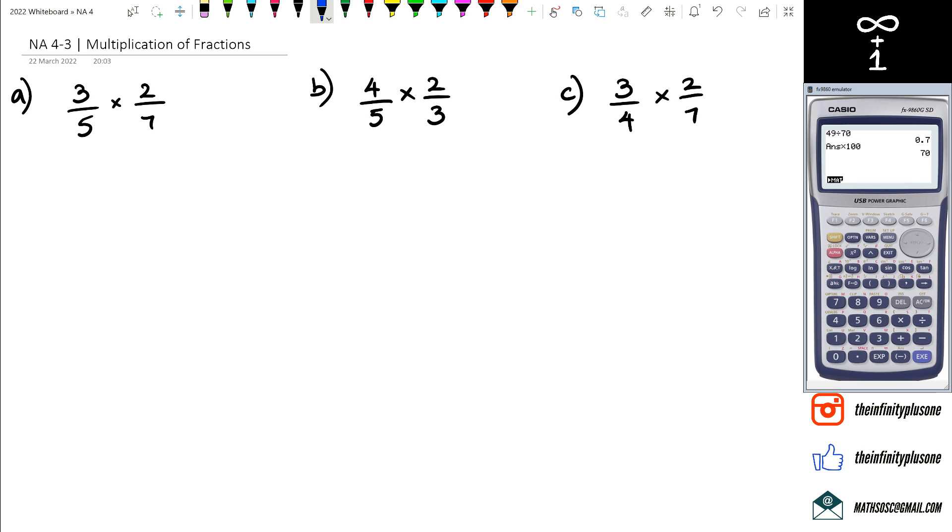If you look at question number a, what we're going to be doing is three times two for the numerator, five times seven for the denominator, and we're going to end up with six over 35 for question a.